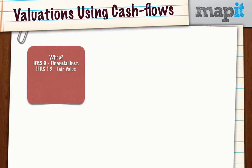Or we may be looking at trying to get a fair value under IFRS 13. Remember, level 3 items in IFRS 13 may require us to do a discounted cash flow calculation to try to get the fair value of an item if we can't get any better information.